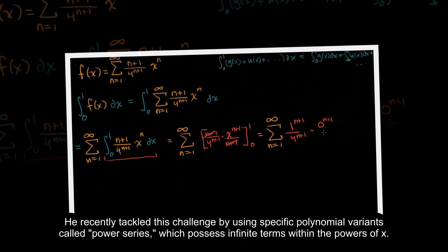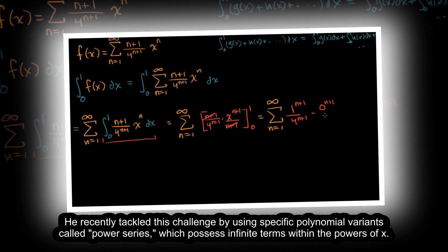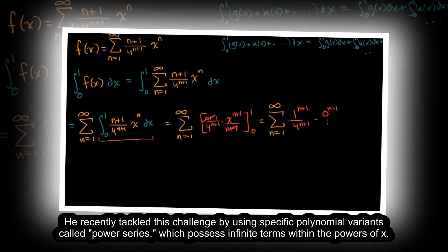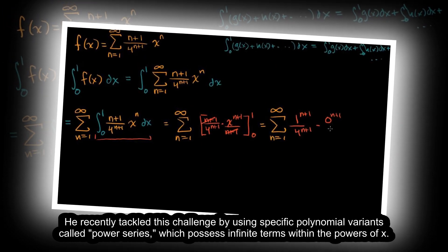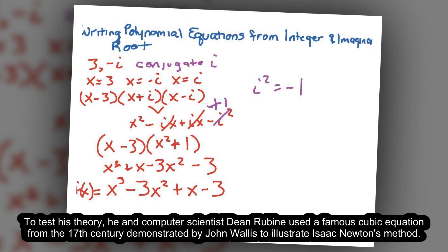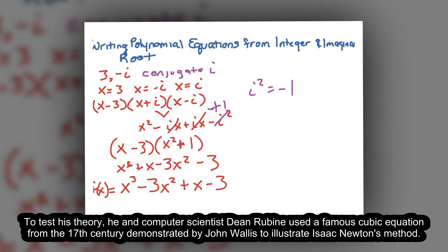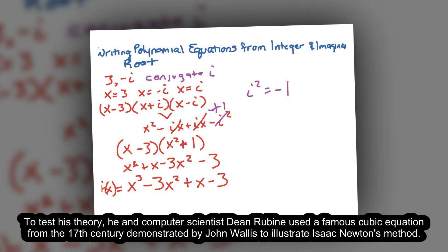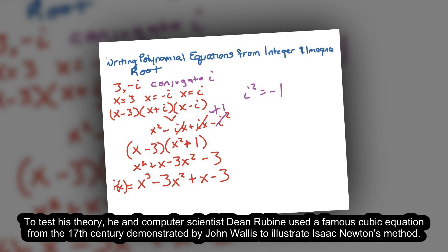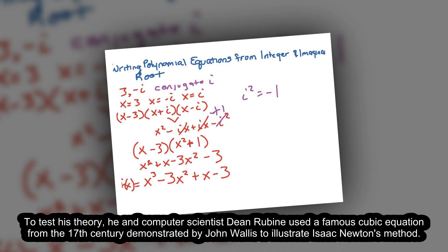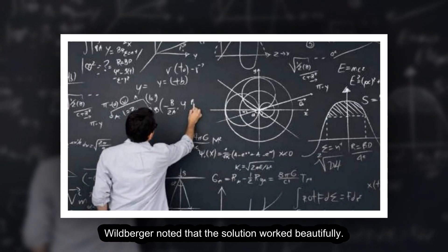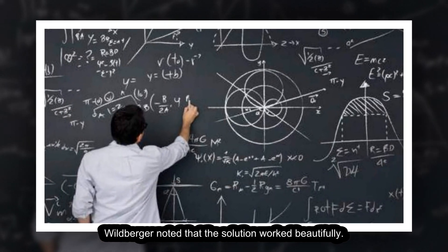He recently tackled this challenge by using specific polynomial variants called power series, which possess infinite terms within the powers of x. To test his theory, he and computer scientist Dean Rubine used a famous cubic equation from the 17th century, demonstrated by John Wallis, to illustrate Isaac Newton's method. Wildberger noted that the solution worked beautifully.